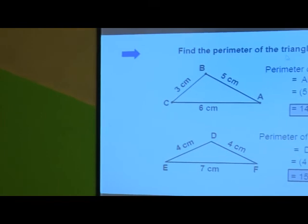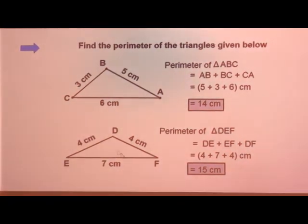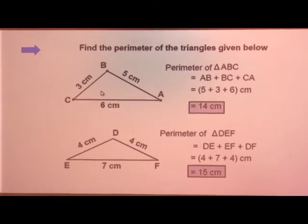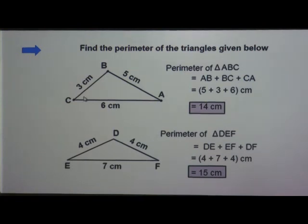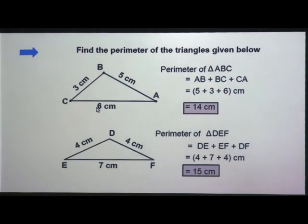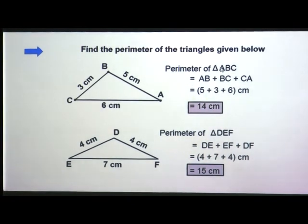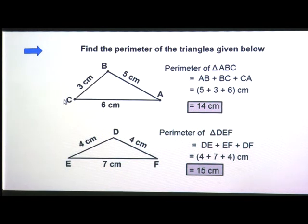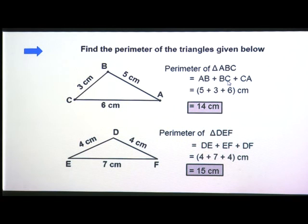We will work through some examples to find the perimeter of the triangles given below. There are two different types of triangles and we will see the perimeter of each one by one. A triangle is a three-sided figure. The length of one side is given, the length of another side is given, and the length of the base, that is the third side, is also given. The perimeter of triangle ABC is equal to AB plus BC plus CA — it is nothing but the sum of all sides.